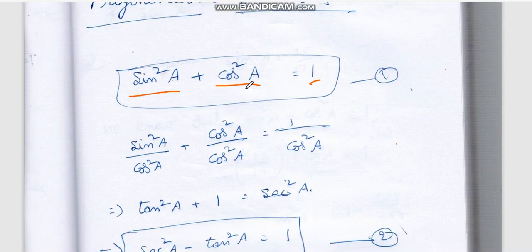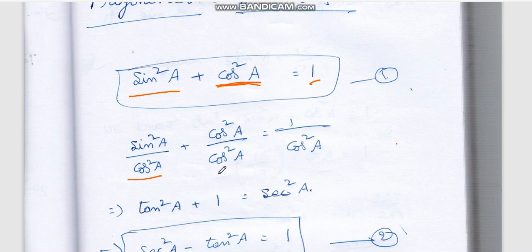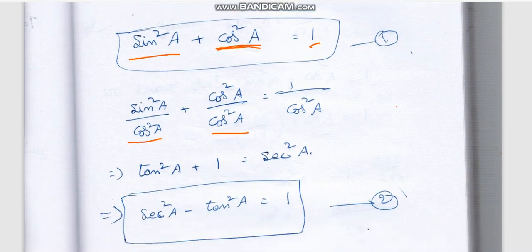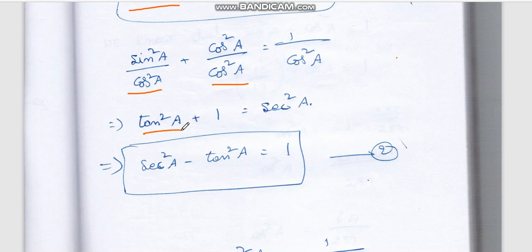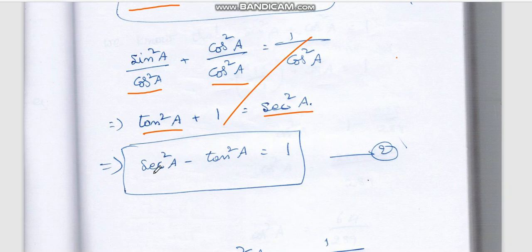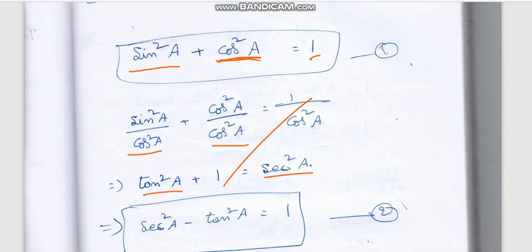sin²a + cos²a = 1. Taking this equation and dividing throughout by cos²a, we get: sin²a/cos²a + cos²a/cos²a = 1/cos²a. Now, sin²/cos² becomes tan²a, cos/cos cancels to 1, and 1/cos²a equals sec²a. So we get: tan²a + 1 = sec²a. That implies sec²a − tan²a = 1.